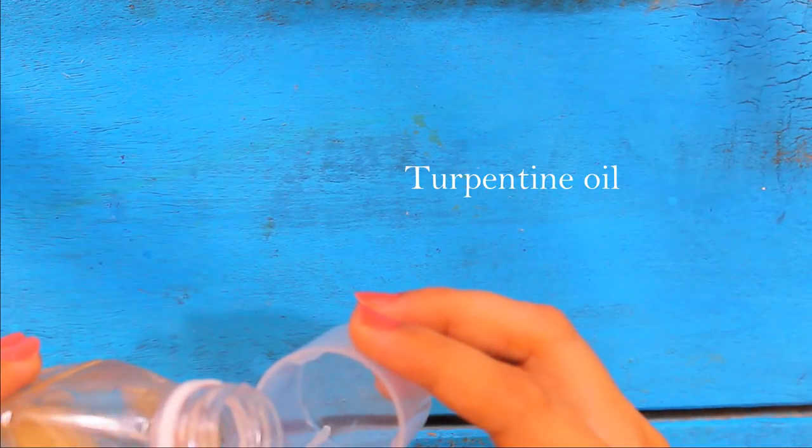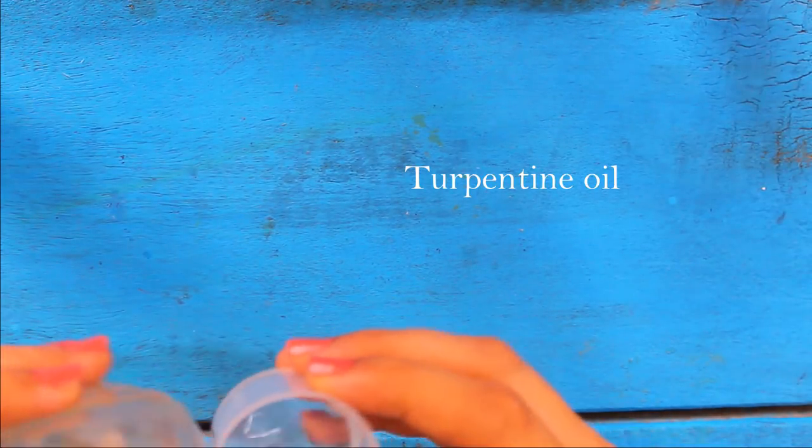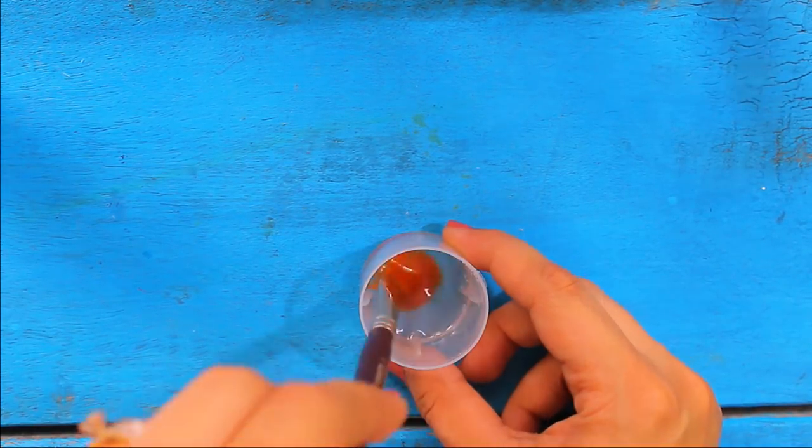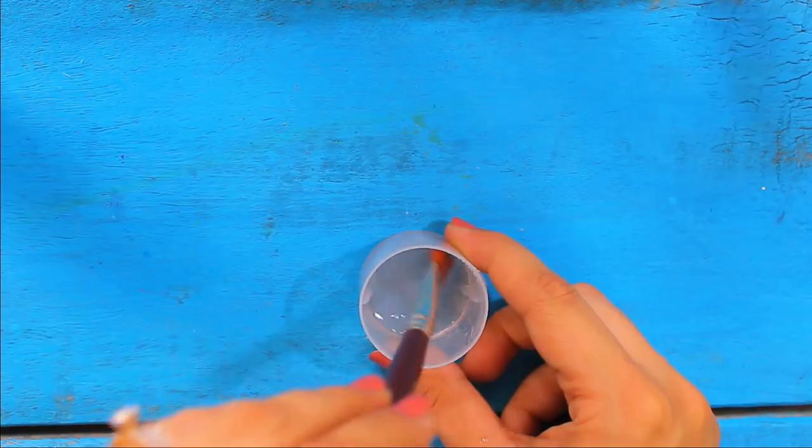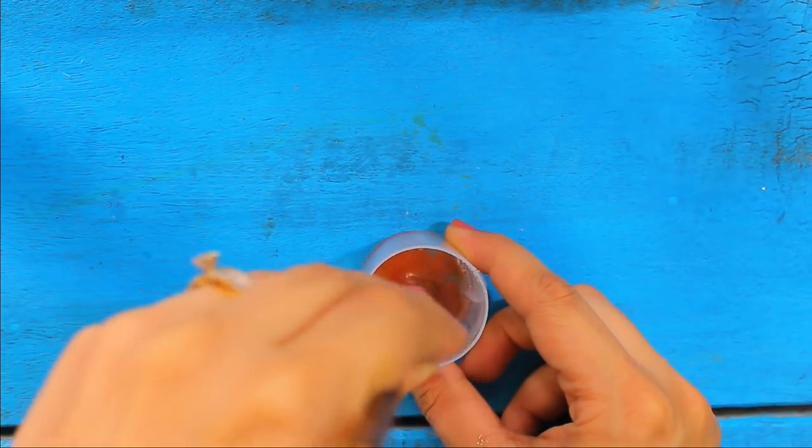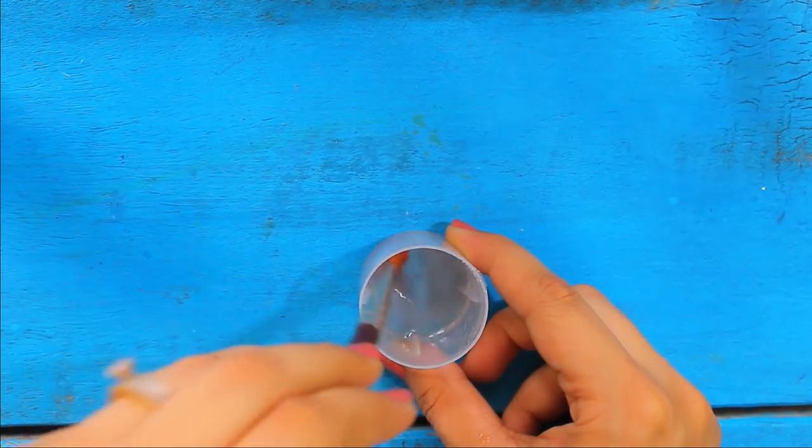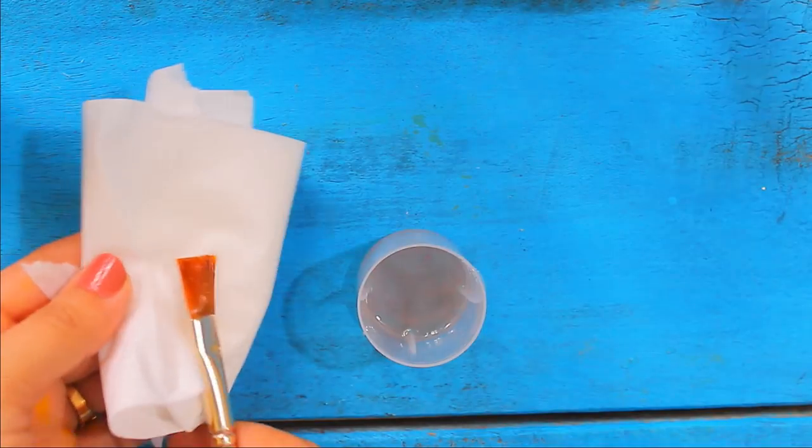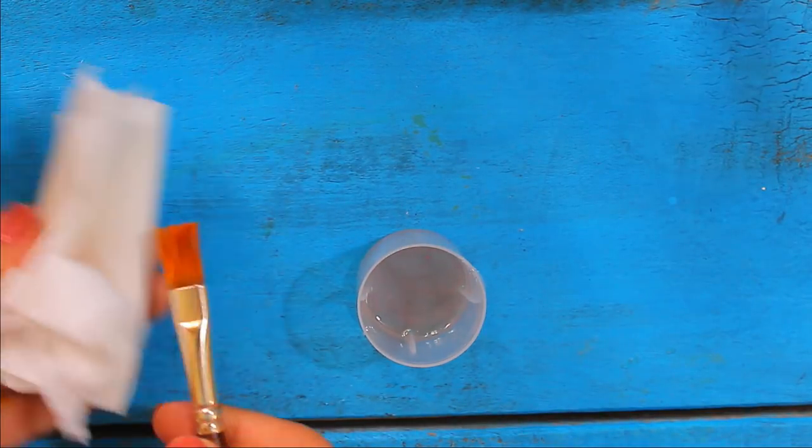Then take this turpentine oil and you can use any waste beaker for dipping brushes depending on the size of the brush. I am using a cap of a bottle here. We can also keep the brush dipped inside the oil depending on the condition of the brush. Remove all the extra oil from the brush. Now take a tissue paper or waste fabric and you will see all the color is coming out from the brush easily.